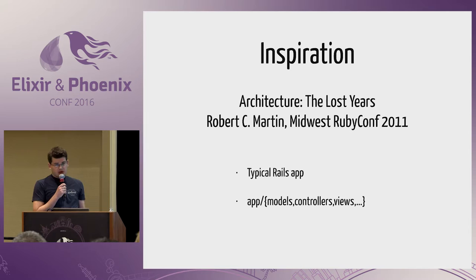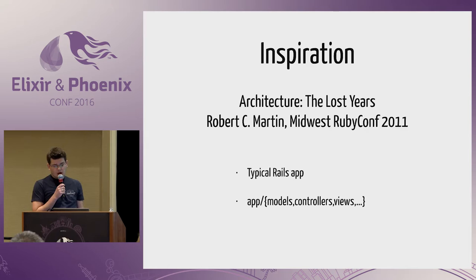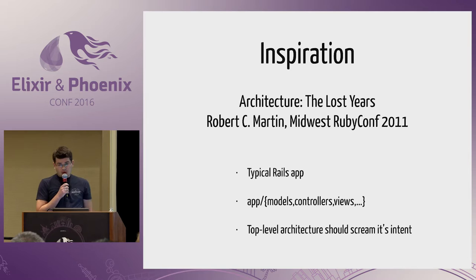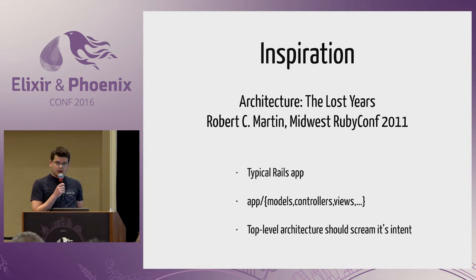In that talk, Robert described a typical Rails application. We look at the project structure, we see the app folder with controllers, models, and views. But by looking at just the project structure, it's often hard to see what the project actually does, what the important parts are, and how things relate to each other. One memorable moment was when he said the top-level architecture should scream its intent — you should be able to look at it and understand what's going on.